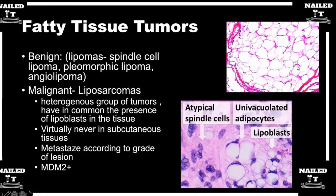Sarcomas are going to start to look hypercellular. You're going to have pleomorphism — one cell that doesn't look the same as its neighbor. Though you might see some normal fat cells, what you really want to look for are those lipoblasts. Lipoblasts are multivacuolated cells with often eccentric nuclei. For those watching on YouTube, there's a great picture of some lipoblasts — tiny little multivacuolated things. As soon as you see those, you know you're dealing with a liposarcoma.